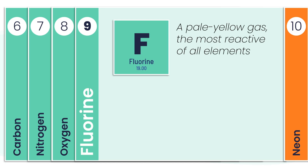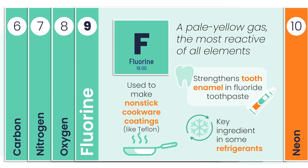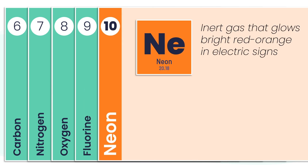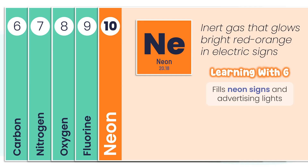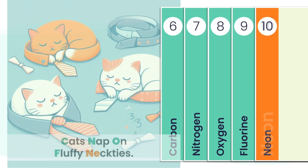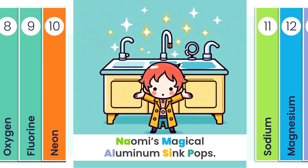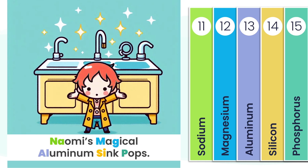Fluorine is a pale yellow gas, and it's the most reactive element in the entire table. You'll find it in toothpaste, non-stick pans, and even some high-tech cooling systems. Neon — you've seen it glowing in bright red-orange signs. It's an inert gas, which means it doesn't react easily. Perfect for advertising lights, cryogenic tech, and high-voltage indicators. That's 10 elements down, and the periodic table is just getting started. Let's move on to the next five — new elements, new roles, and another clever memory trick to help you remember them.